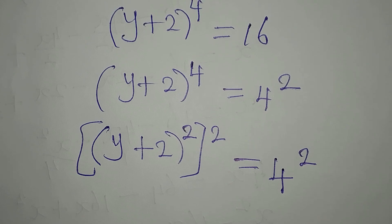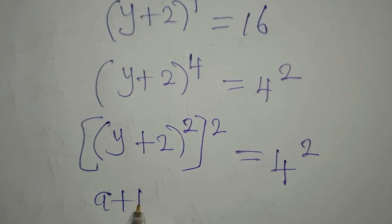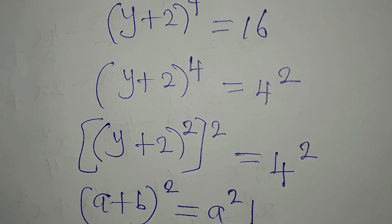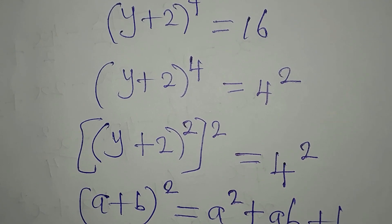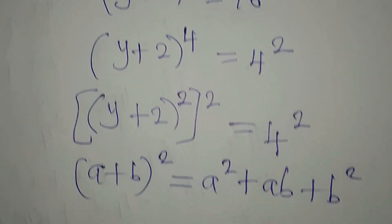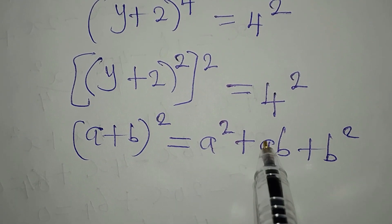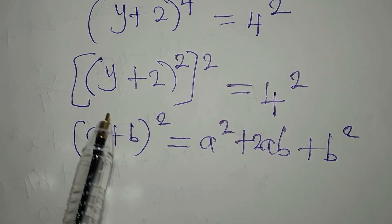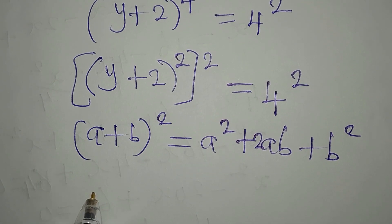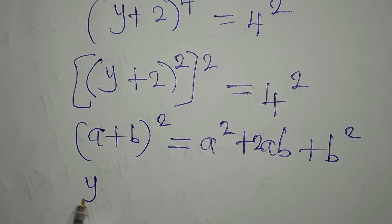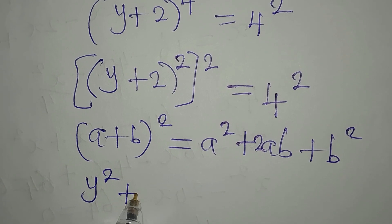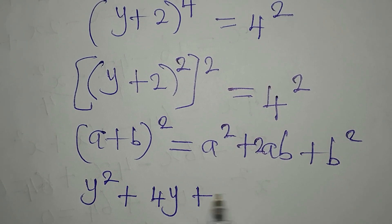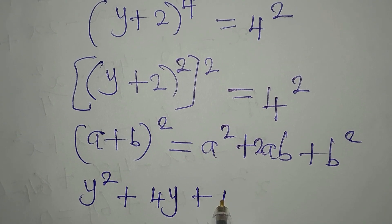If we have (a+b) squared, this is a squared plus 2ab plus b squared. So our (y+2) squared is going to be: a squared which is y squared, plus 2ab which is 2 times y times 2, that is 4y, then plus b squared which is 2 squared, giving us 4.